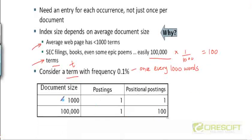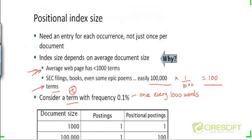So if you look at the postings, let's say this term T appears in a document which is an average web page. In that case you are going to have one single posting for that document. Let's say the document size is a thousand, we will have one posting and exactly one positional posting within it. But if you take the document that had a length of a hundred thousand words, there will be one single posting for that document containing the doc ID, but within that posting there will be a hundred positional postings corresponding to the hundred occurrences of this term.